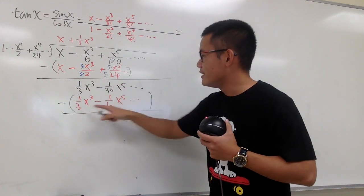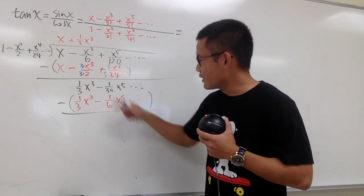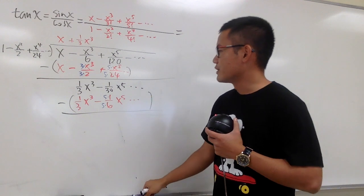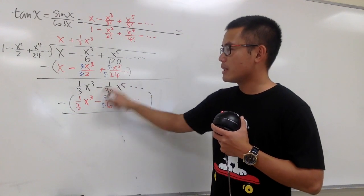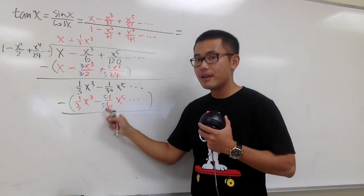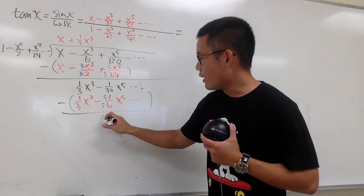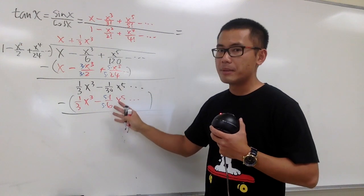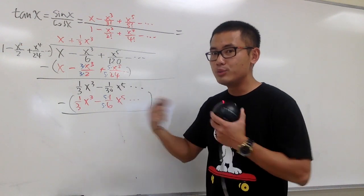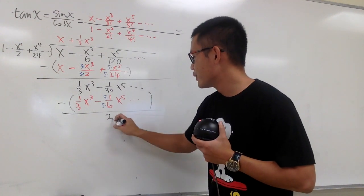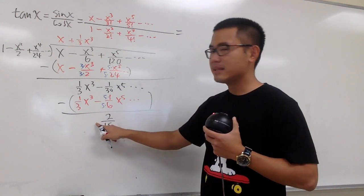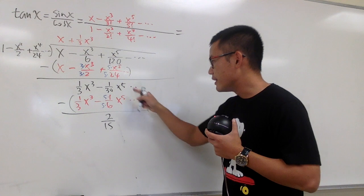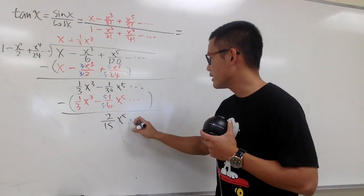Next, negative 1 over 30 plus 1 over 6. Multiply by 5 and 5 to get a common denominator. Focus on negative 1 plus 5, which gives us 4 — that's positive. So 4 over the denominator 30. Four over 30 reduces to 2 over 15. That was positive because negative 1 plus 5 is positive. And this is the x to the fifth power term.